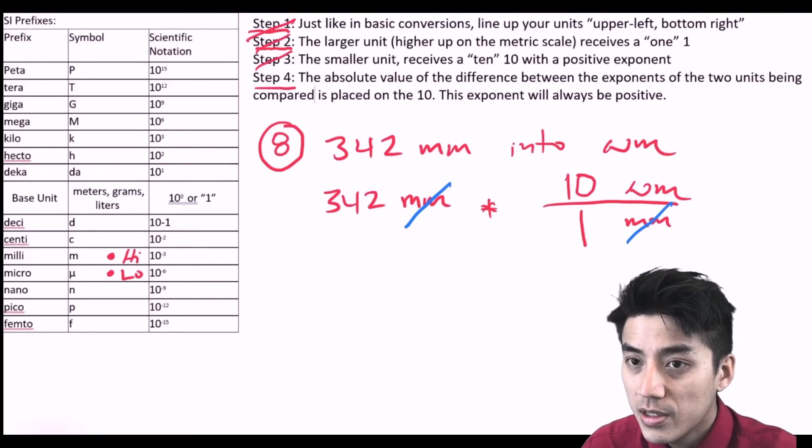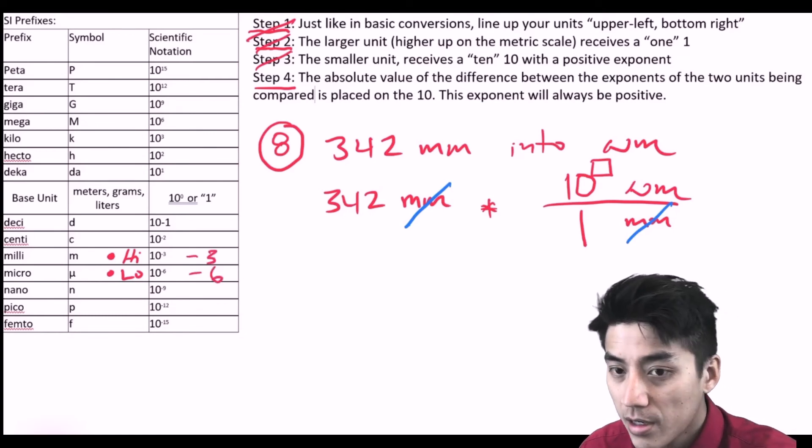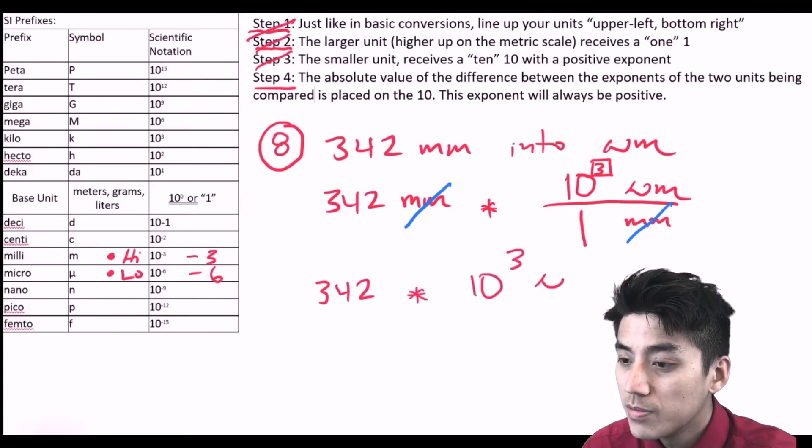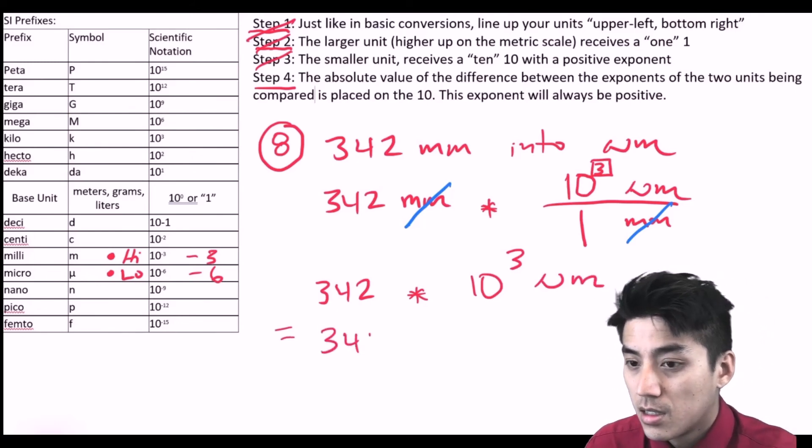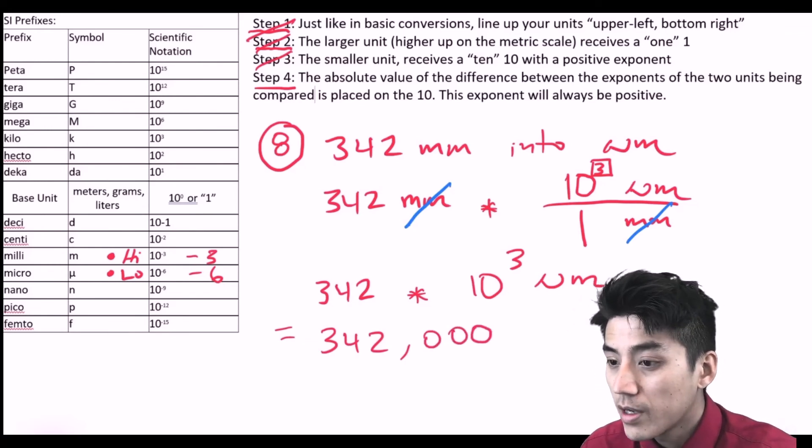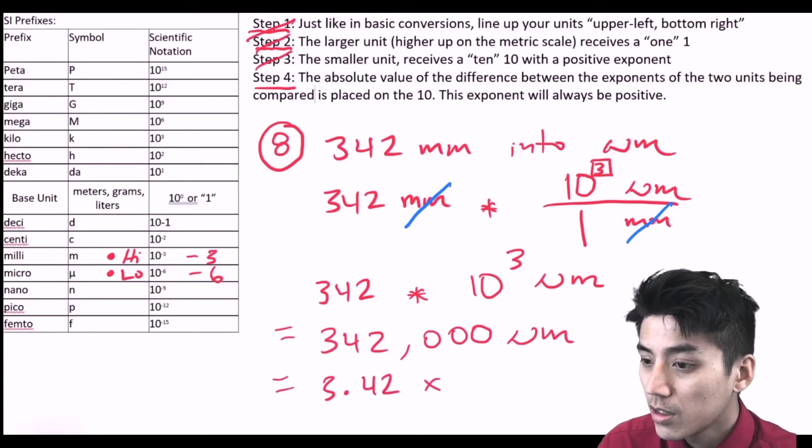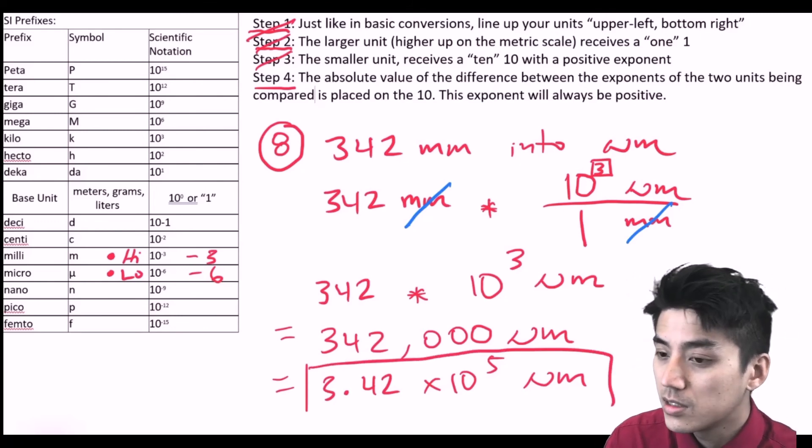To figure out the exponent, let's look in the far right column under scientific notation. Milli has a negative three rating, micro has negative six. The absolute distance between them is a positive three. So let's write our answer out. 342 times 10 to the third micrometers. We could rewrite this as 342,000 micrometers, or to make it look nice and pretty in proper scientific notation, 3.42 times 10 to the fifth micrometers.